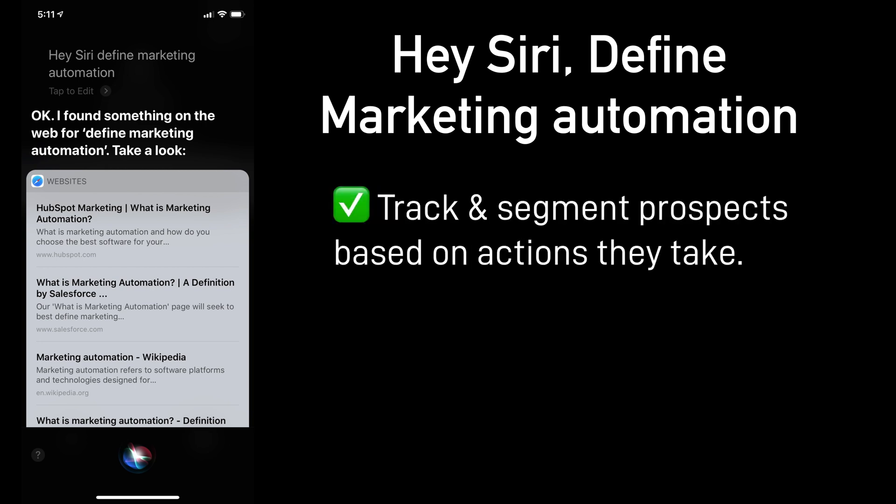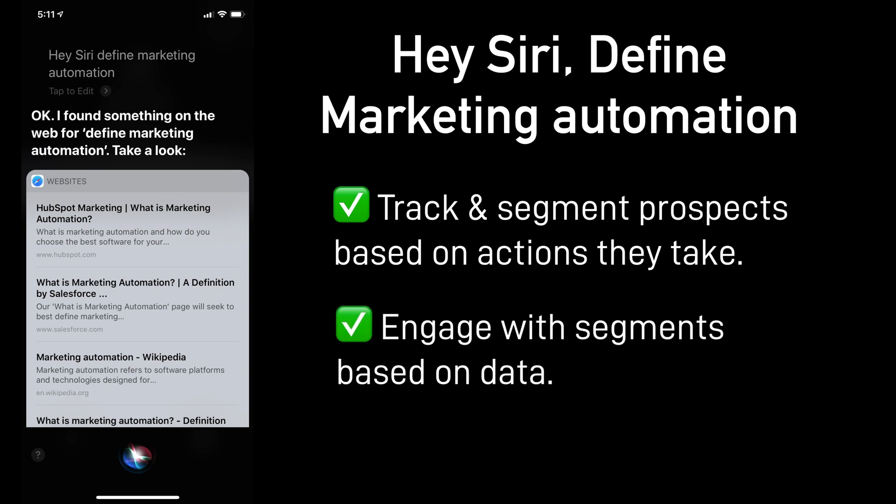Marketing automation lets you track and segment prospects based on actions that they take. You can engage with those segments based on the data that you receive. So the idea is someone could be on your website for weeks, visiting pages, but only after they convert will you actually know anything about them. With marketing automation, you can be following them from the beginning of their journey, even before they opt in until after they've become a customer.